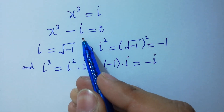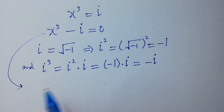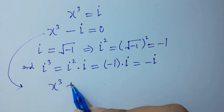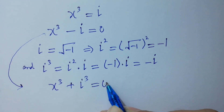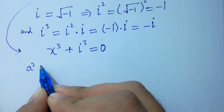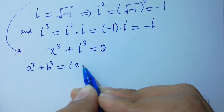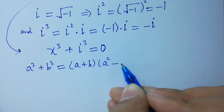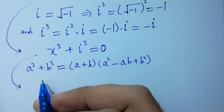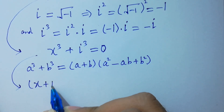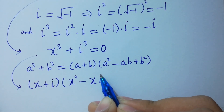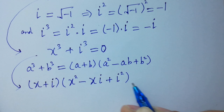So here, x cube minus i equal to 0 can be written as x cube plus i cube equal to 0. As we know that a cube plus b cube equal to a plus b times a square minus ab plus b square. So it can be written as x plus i times x square minus xi plus i square equal to 0.